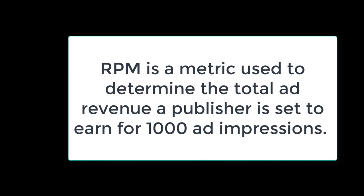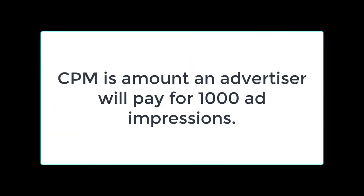RPM is a metric used to determine the total ad revenue that a publisher is set to earn for a thousand ad impressions — you are the publisher, you reap that money, RPM. CPM on the other hand is the amount an advertiser will pay for a thousand ad impressions — it's a cost to the advertiser, CPM. Pay attention to that. After you make a hundred or so videos, go and start looking at those analytics.